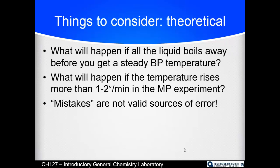For your lab report, consider: what would happen if you boiled all of the liquid away before you saw a steady boiling point temperature? For the melting point experiment, what happens if your temperature range is obtained while heating faster than one to two degrees per minute? If a student reports a melting point range from 75°C to 83°C but it only took 30 seconds, the experiment wasn't done properly — that's why the range was so large. An 8-degree range is too wide for a melting point unless your sample is impure.